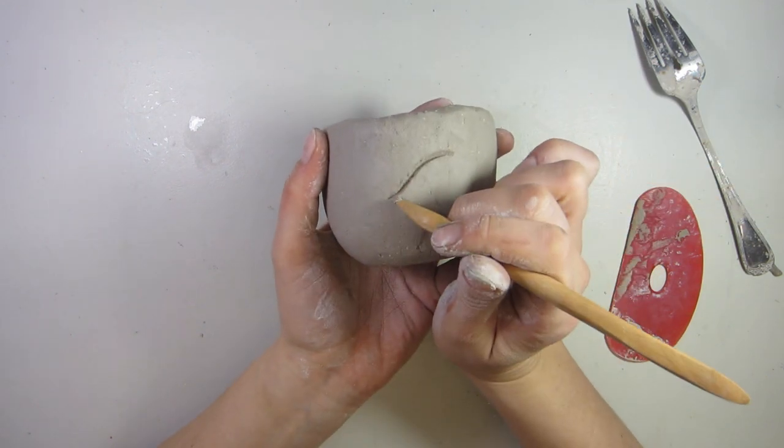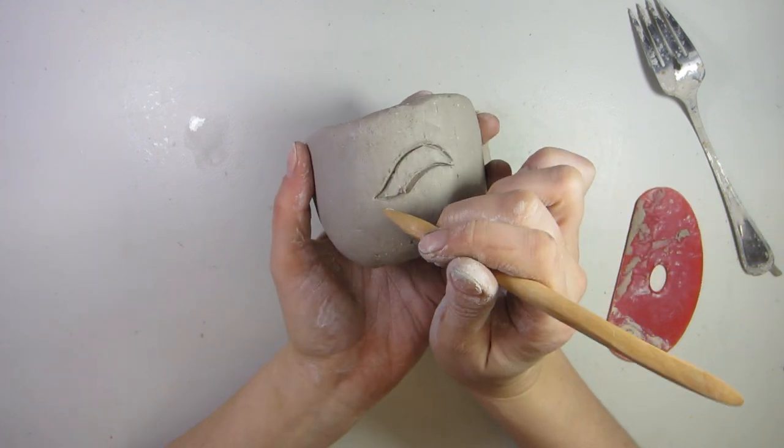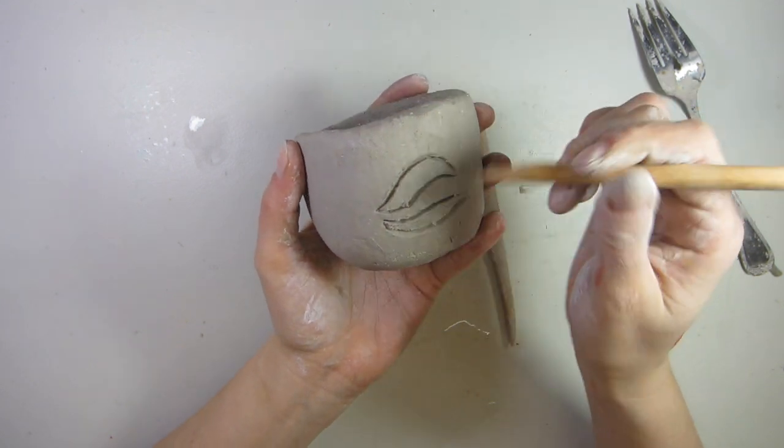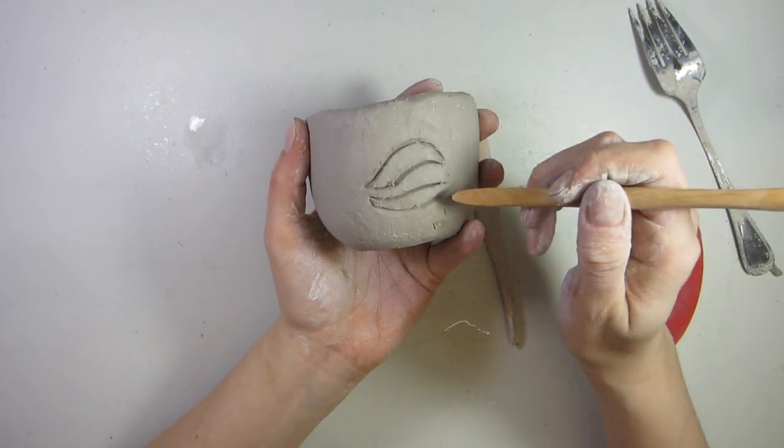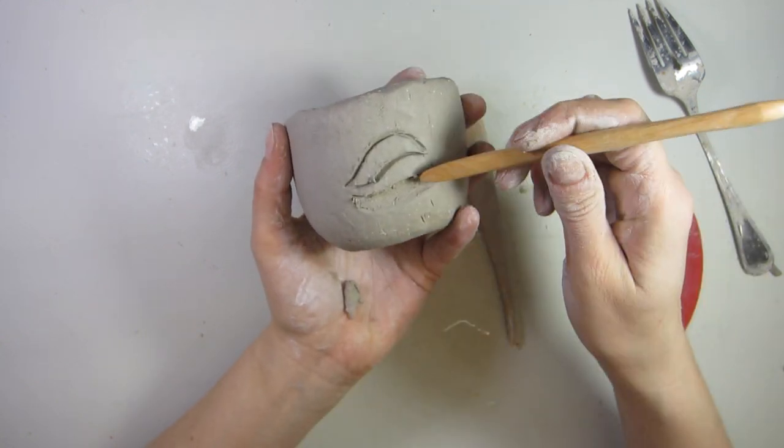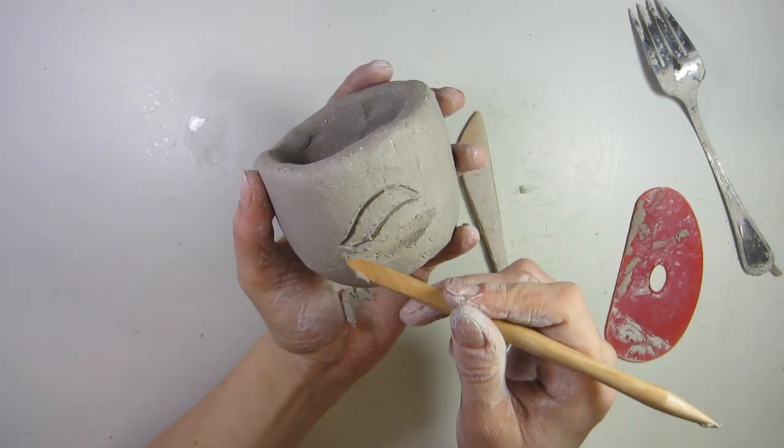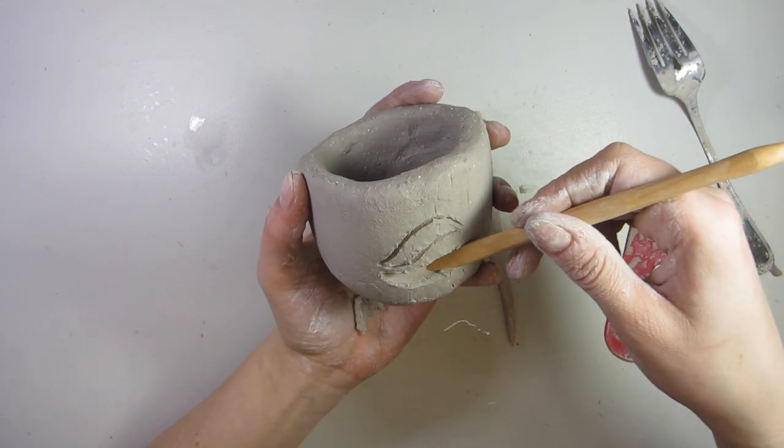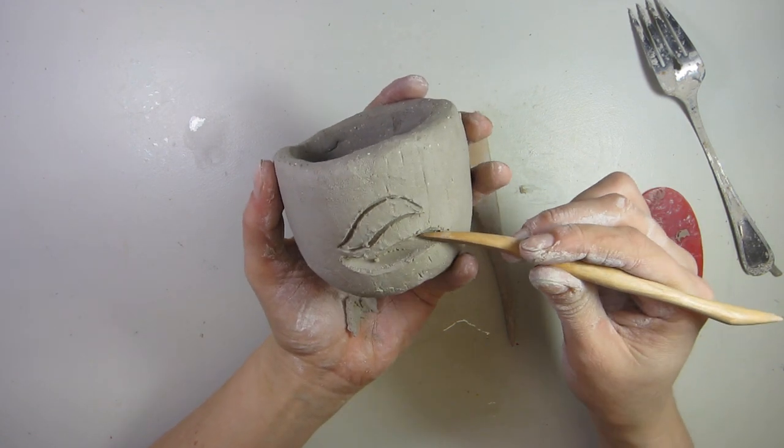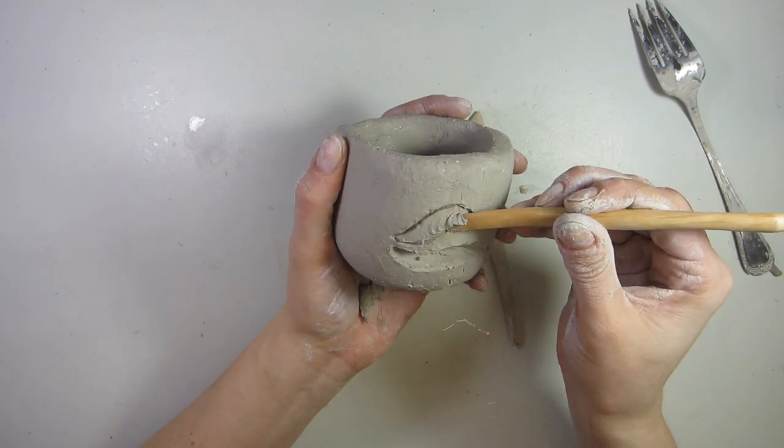So all you have to do now is use whatever lovely wood tool you want and you can add in marks. You can cut them out if you needed to just called subtractive method. Now I didn't do my walls too. I didn't make too thin of walls. So I'm actually able to do this without going through my clay wall.